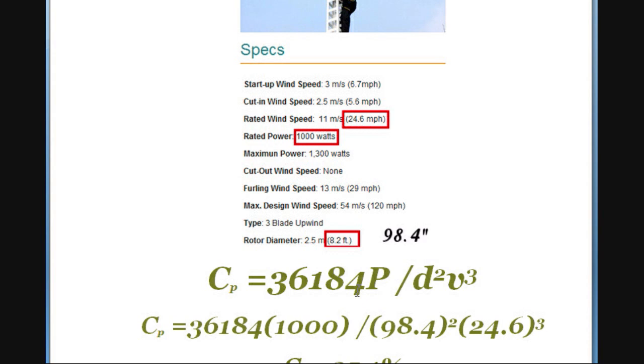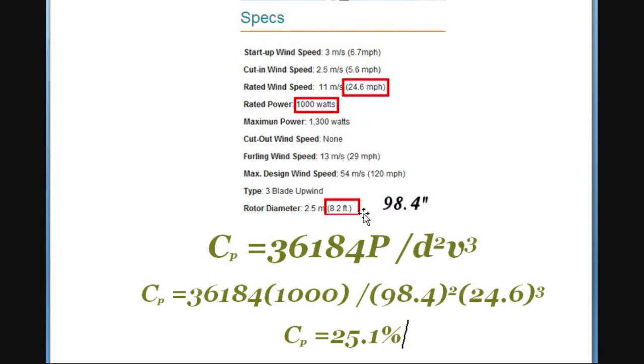I just pulled the spec sheet up on it. We're going to pick off these values that we were talking about here. What we're looking for is P, which is the power. There it is right up here, the rated power, 1000 watts. We're going to look next for d, which is the diameter of the rotor. Oh, here's diameter rotor. They've got it in meters and in feet, and then I put how many it is in inches. And so we'll substitute, since we derived this formula based on inches, we'll substitute 98.4 again for that.